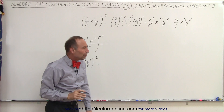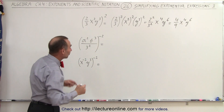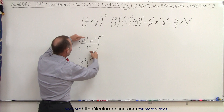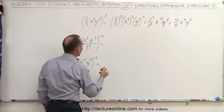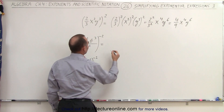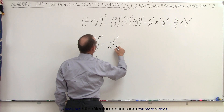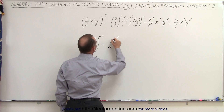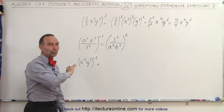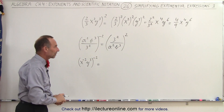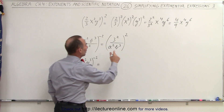But what do we do when we have a negative exponent? One easy thing to do is simply take the inverse and change it to a positive exponent. In other words, this can be written as 3 squared divided by a squared b cubed, all of it raised to the positive 2 power. Now we've gotten rid of that negative exponent, which makes things a little bit easier.